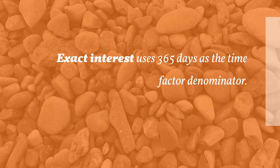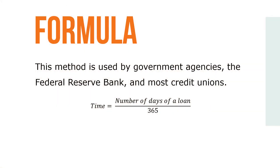Exact interest uses 365 days as the time factor denominator. This method is used by government agencies, the Federal Reserve Bank, and most credit unions, where time equals the number of days of a loan over 365.